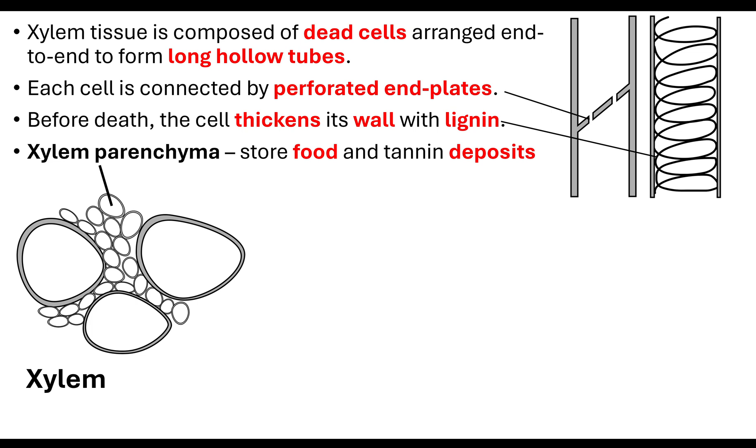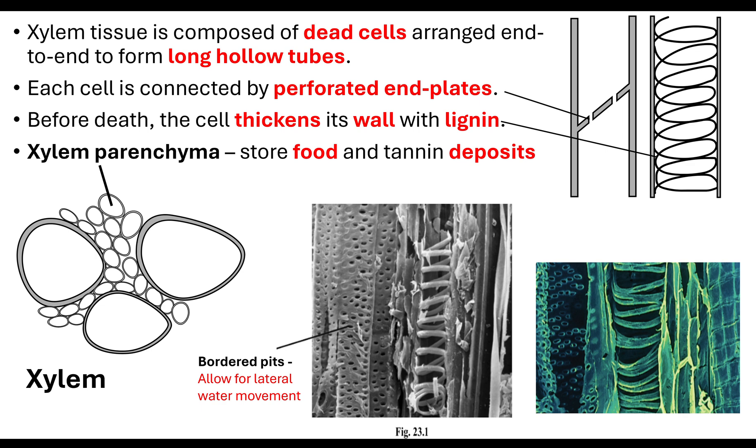So the xylem vessel itself is tissue that's made up of dead cells, whereas the xylem parenchyma have not yet matured to become the xylem tissue. Not only does the xylem parenchyma store the food and the tannin deposits, it needs a way of getting that substance to it. Therefore the xylem is actually bordered with these pits. That allows for lateral water movement. Cytoplasm is a liquid and therefore the water needs to move across to the cells providing the mineral ions that may be necessary for the cell to perform its function.